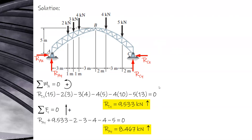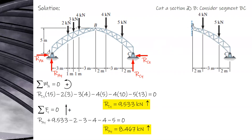Next, cut a section at B and isolate one part — either the left side of B or the right side of B. Let's consider the right side, or segment BC.